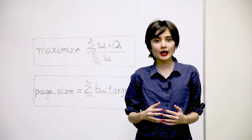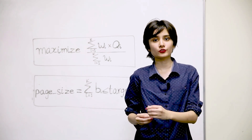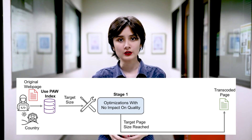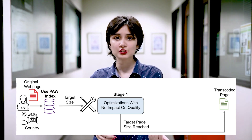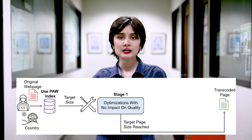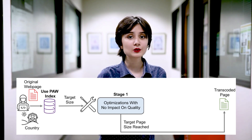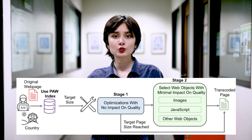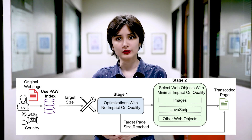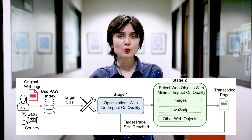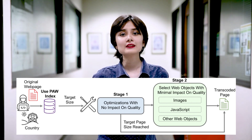AW4A solves an optimization problem which maximizes page quality given page size constraints defined by PAW. We define total quality as the weighted average of the individual qualities of the objects on the page. We know this problem is NP-hard — you can check out the proof in the paper — which is why we approximate a solution using a two-stage approach. In the first stage, we consider optimizations with no impact on web page quality, such as minification or gzip compression. If the target page size is met at this point, we return the transcoded page. Otherwise, pages move on to stage two, where they undergo optimizations that may impact quality, such as image resolution reduction or JavaScript reduction.